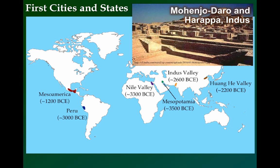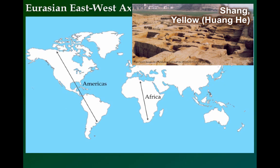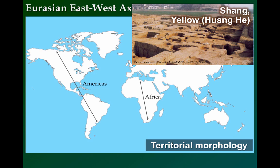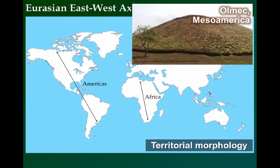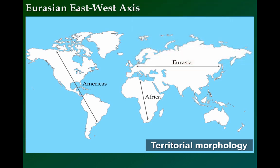The most recent of the first civilizations developed around 1200 BCE in Mesoamerica around the southern part of modern-day Mexico. Most were in the northern hemisphere and relatively close to the Tropic of Cancer. The lone exception was ancient Peru; however, it was still equidistant from the equator close to the Tropic of Capricorn. The shape or territorial morphology of Eurasia was also significant. Its east-west orientation allowed for an easier diffusion of plants, animals, and trade.